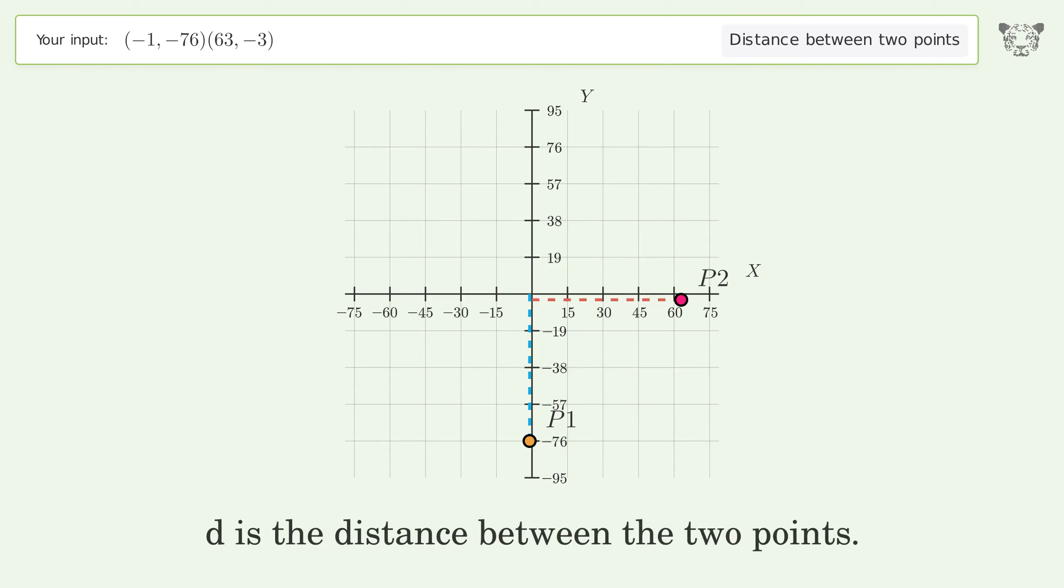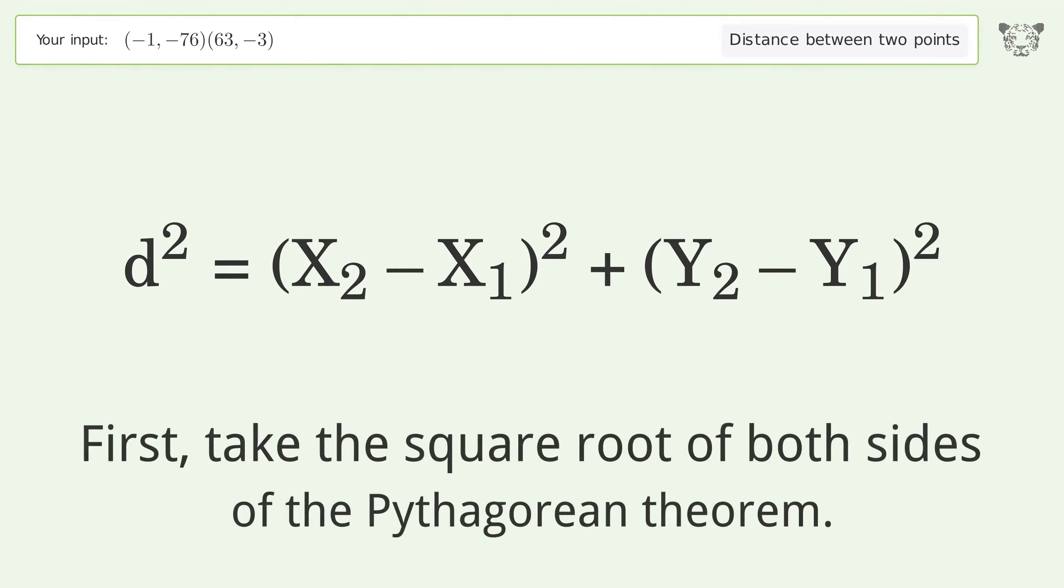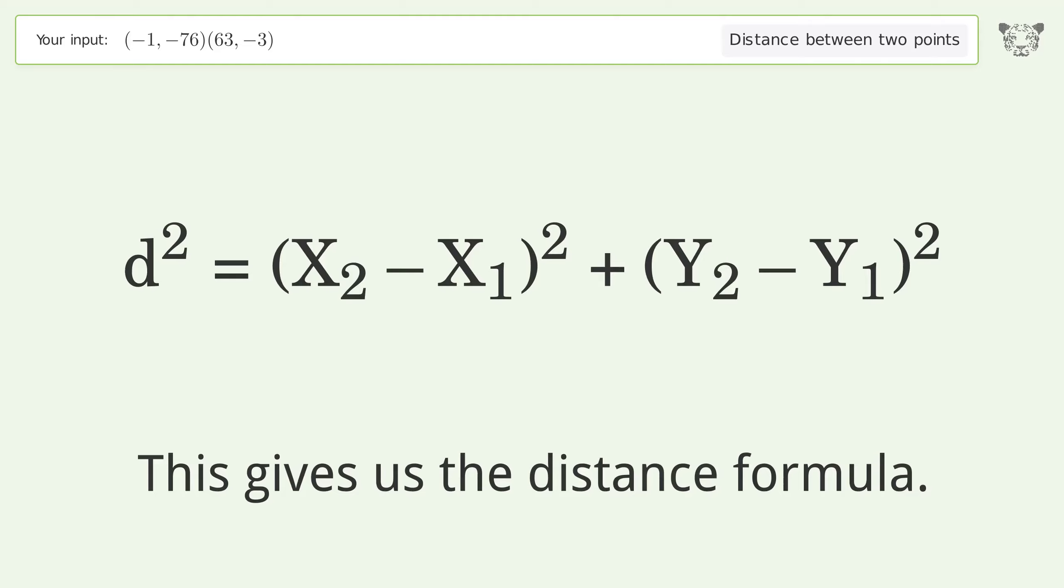d is the distance between the two points. First, take the square root of both sides of the Pythagorean theorem. This gives us the distance formula.